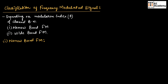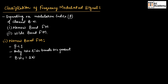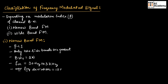Now, let us understand what is narrow band FM. In narrow band FM, the value of modulation index beta will be less than 1. Only two side bands are present, and the transmission channel bandwidth will be equal to 2W. The message signal frequency is between 30 Hz to 3 kHz, and the maximum frequency deviation is 15 kHz. The application of narrow band FM is that it can be used in mobile communication.